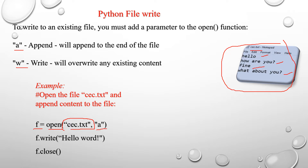After that, I am going to write using f.write(). The content is the word 'allow'. After that, I am going to close the file. If you run this code, the Python interpreter will append the word 'allow' to the end of the file.